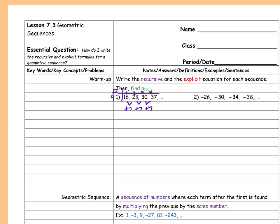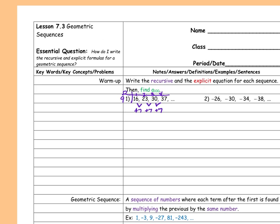That gives me everything I need for my formula. My recursive formula is f(x) = f(x−1) plus my common difference, and my starting point is f(1) equals some number. And my explicit is f(x) = mx + b, where m is my common difference.